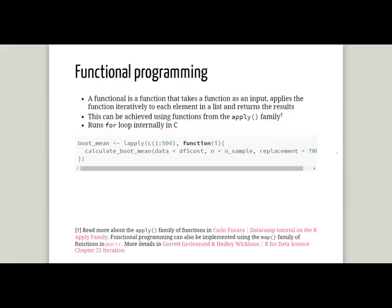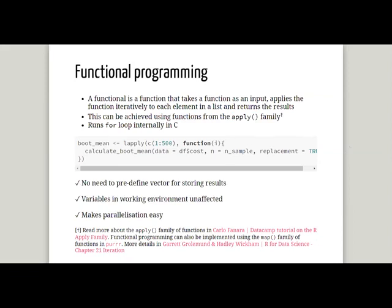Some of you may have already used the apply family of functions or the map family from purrr. These are functionals — functions that take a function as input and apply it iteratively to a list you define, returning a result. They are like for loops, but the for loop is actually run internally in C. There's no need to pre-define the results vector, and everything that happens within the functional stays within its own scope, so the global environment variables are unaffected. This also makes parallelization much easier.